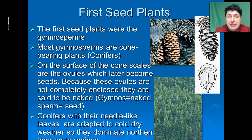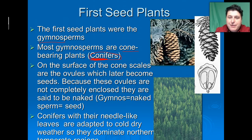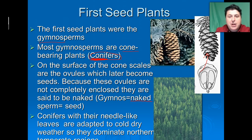The first seeded plants were probably like our modern-day gymnosperms. Most gymnosperms are cone-bearing plants, or conifers — the first part of the word, 'coni,' means they have cones. They're called gymnosperms because the seeds are produced without any kind of covering; they're held inside the cone as they develop, and once ripe, the cone opens and drops the seeds. Since they're not completely covered, they're called naked seeds — from the Greek 'gymnos' meaning naked, and 'sperm' meaning seed.